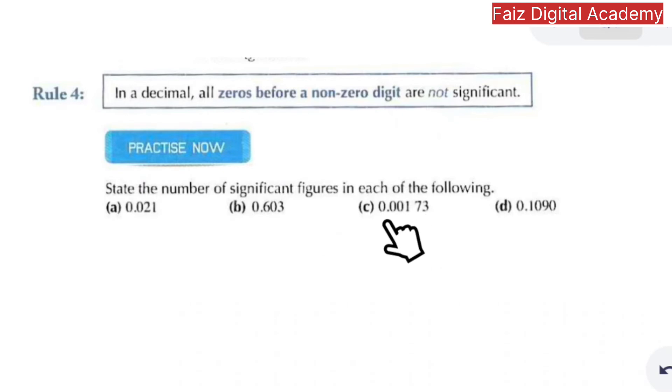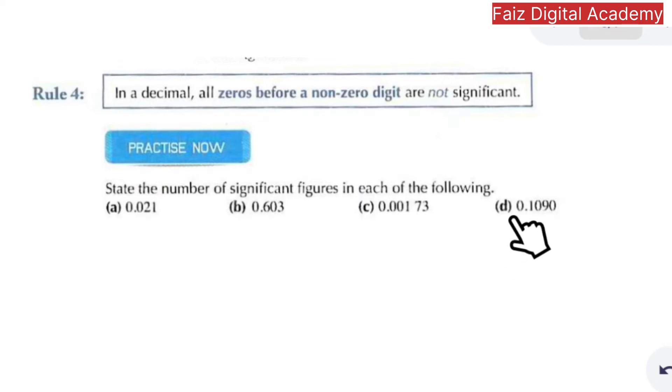The zeros before non-zero digits are non-significant. In part d, 0.1090 — the leading zero is not significant, but the other digits are evaluated by the applicable rules.